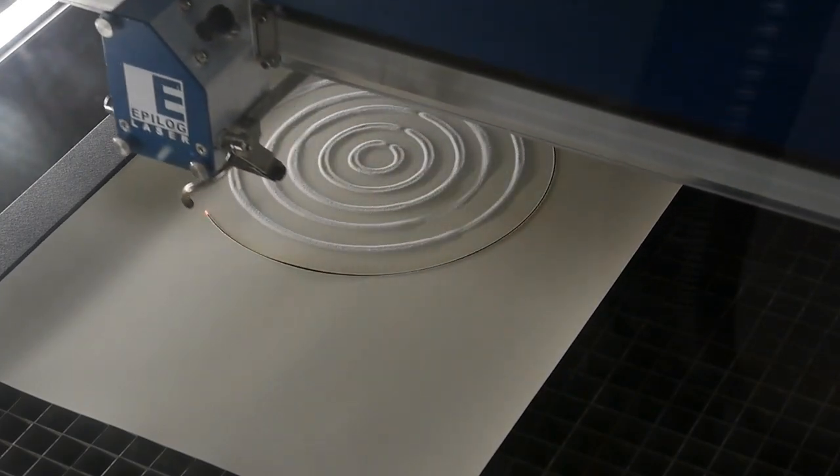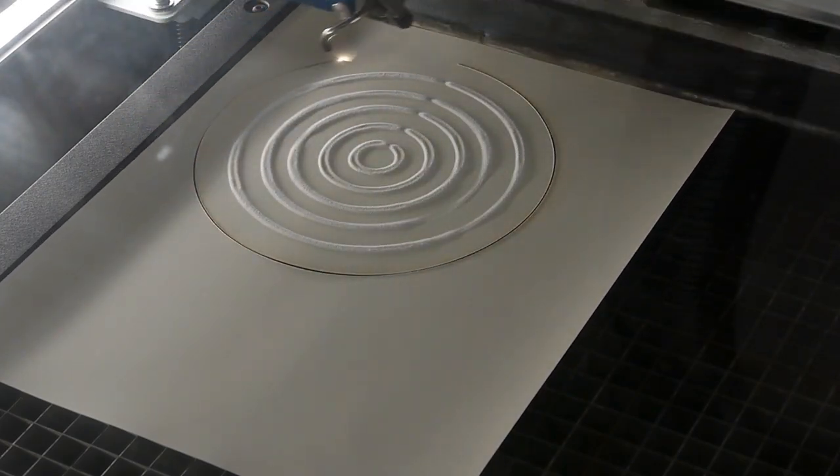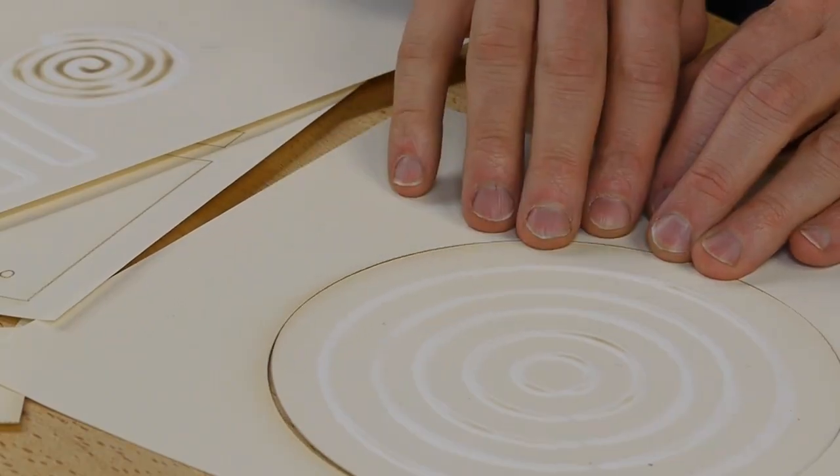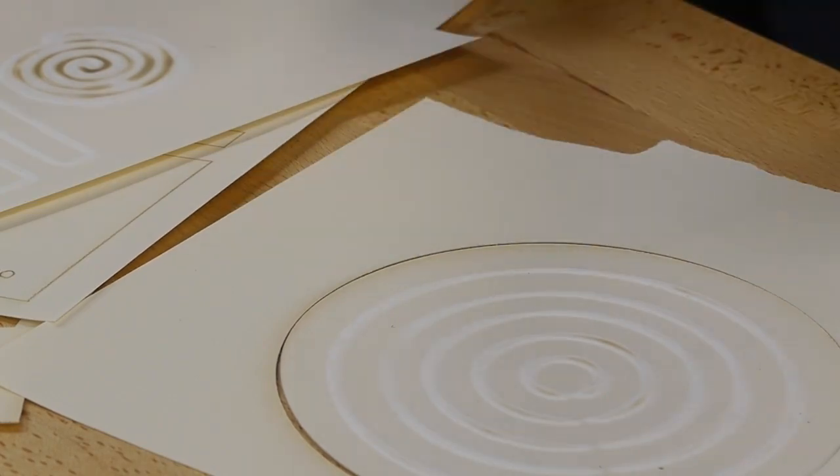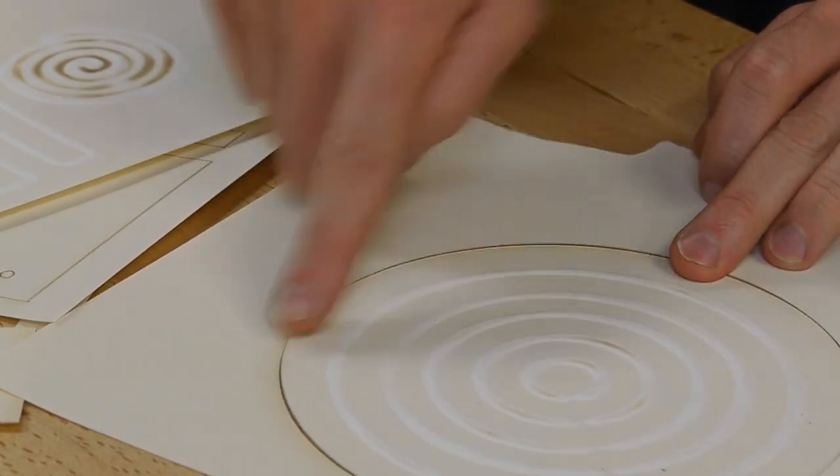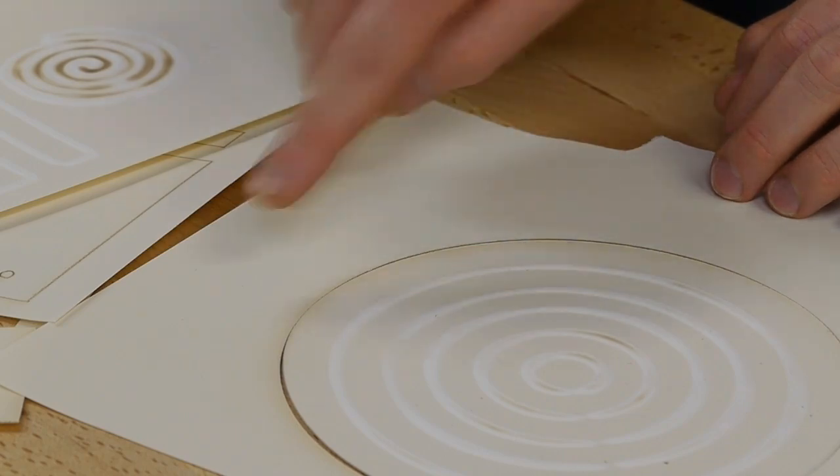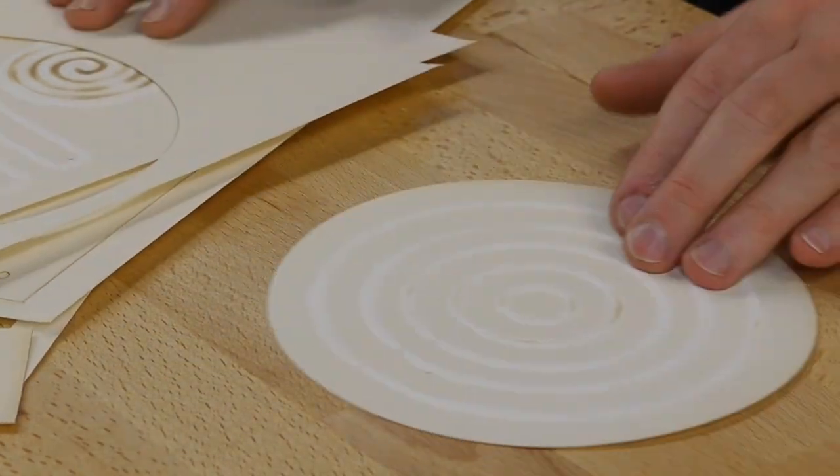And all you have to do is change the bed height so that the paper is low for the 3D features. And then you just raise the bed back up to the focal plane and cut it out. So you can have 3D features that are perfectly registered with your cut features. Pretty neat.